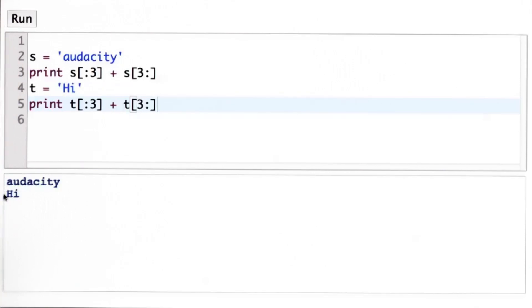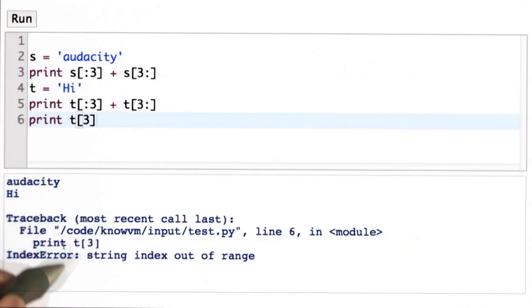So this indexing subsequences is very resilient. It works even when we index positions that don't exist in the string. This is different from when we were doing indexing of particular positions by themselves. If we did t[3], that will give us an error because there's no character at position 3.